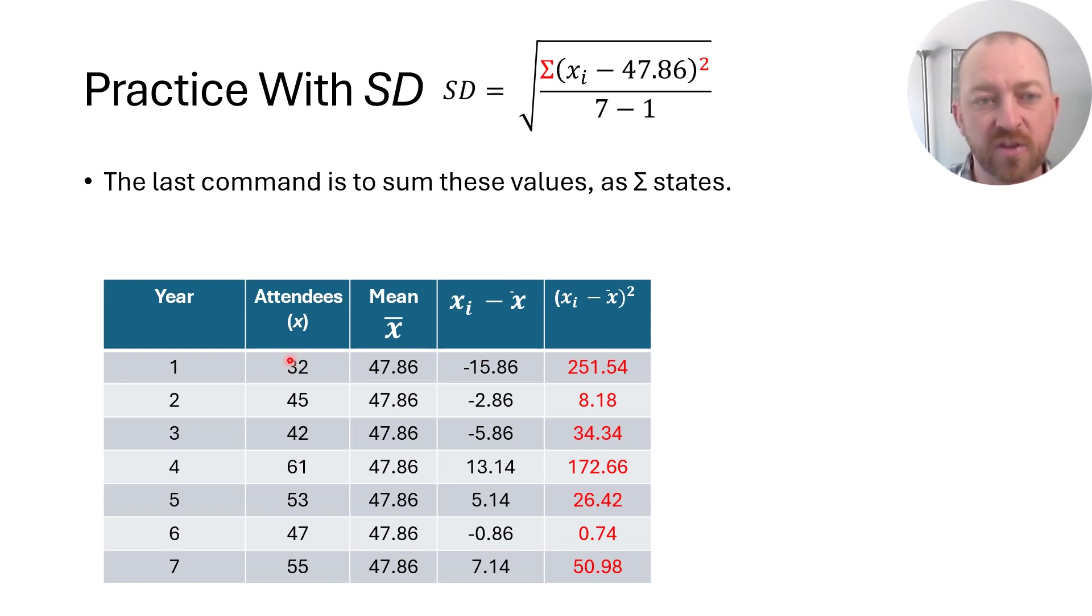So these are the deviation scores. In other words, what we're saying is this is how much 32 was different from the mean that particular year. It was different by 15.86 people. This one was different by 2.86 people. And now again, this is important that half of these should be negative and half of these should be positive. And as you can see, that's true here. One thing you'll note, a way to check your math is you can add this column up and you should find that it's zero or it's very close to zero. It's probably very close to zero if we add these up because we round it ever so slightly.